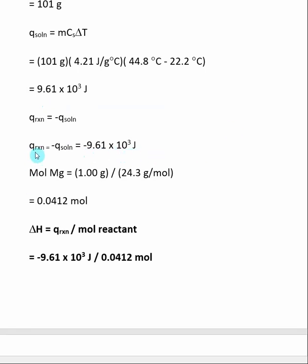Now that we have q reaction, all we need to do is find the number of moles of reactant. I told you we used one gram of magnesium. We can get the atomic weight from the periodic table, and if you take grams and divide by atomic weight, you end up with moles.